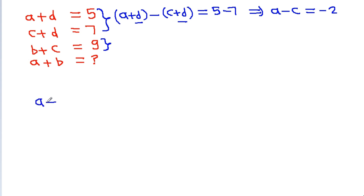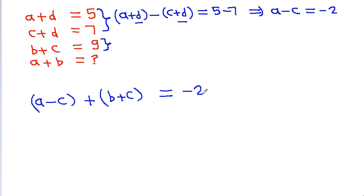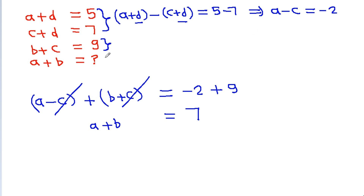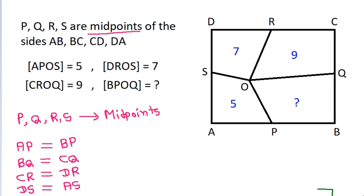We have A minus C equals minus 2 and B plus C equals 9. Adding these: A minus C plus B plus C equals minus 2 plus 9, so A plus B equals 7. Therefore, the area of BPOQ is 7.